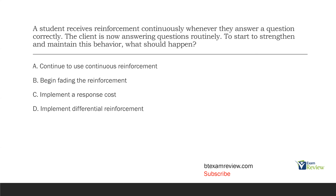Option A: continue to use continuous reinforcement. If you continue to use continuous reinforcement, once you start fading it later, it's going to be more difficult to change the reinforcement schedule. Ideally, as soon as they start to display the behavior you want to see, we should start fading out reinforcement because we want to start strengthening that behavior and then on to maintenance and generalization. Constant use of continuous reinforcement is counterproductive.